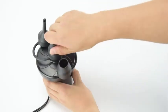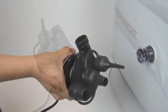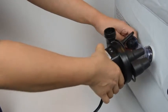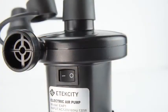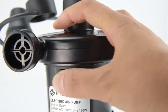To deflate your item, simply attach the nozzle to the deflation port and connect the nozzle to the air valve. Turn on the air pump and your item will start to deflate.